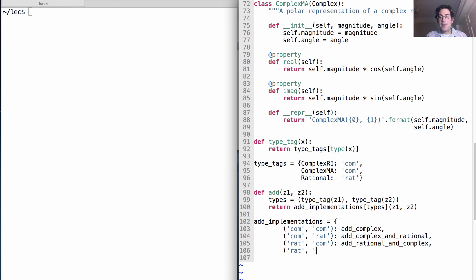And finally, what if we have two rational numbers? We can just call add_rational. And we're done.